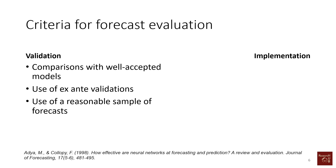Now we come to implementation, and the first point is convergence. This relates very much to artificial neural network models where convergence could be an issue. In machine learning and deep learning models, it could be that sometimes the training data cannot fit the parameters and the model doesn't converge. We have to make sure that the number of hidden layers we select allows the model to converge and come up with some estimated parameters. Sometimes a model works in some instances and doesn't converge in others, so we have to make sure the model converges every time.